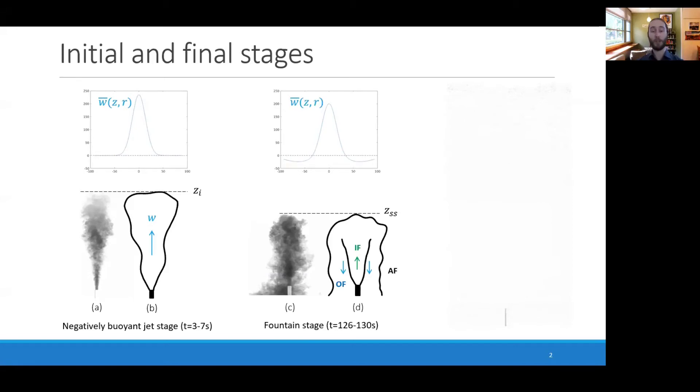There are two stages of this flow: the initial negatively buoyant jet stage, which occurs during the initial rise as the jet is getting constantly decelerated by its opposing buoyancy. At some point, this is going to reverse direction after reaching some maximum height and collapse down onto itself. The initial height that it reaches we're denoting as zi, the maximum rise height.